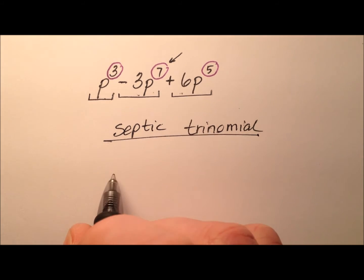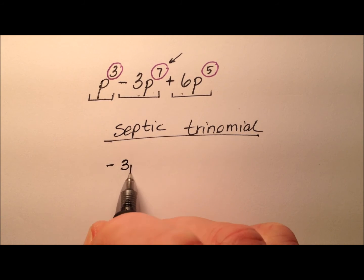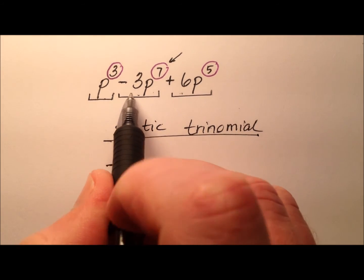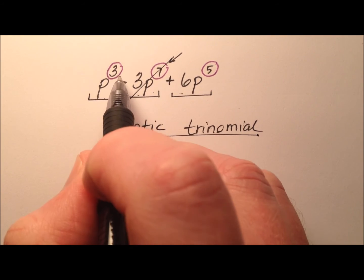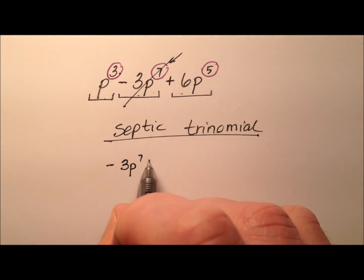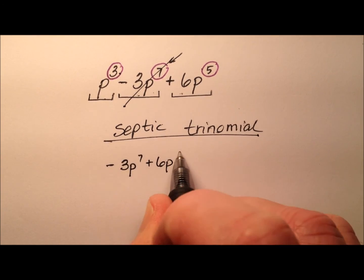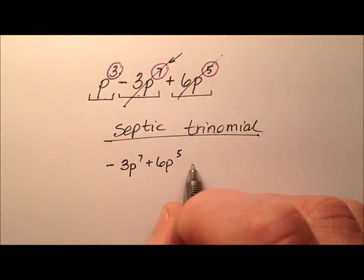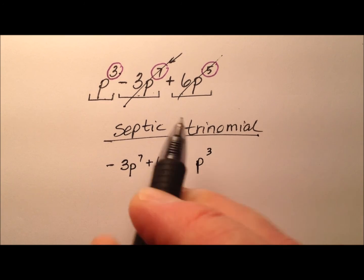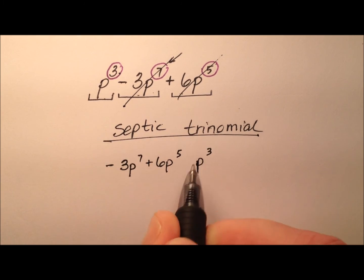So we're going to start with the highest degree term, which is negative 3p to the seventh. Then we're going to write the next highest degree term, so between 3 and 5, it's going to be positive 6p to the fifth. And then we'll wrap it up with putting p cubed here. But of course, he's not negative, so he's positive, so we'll put a plus right there.